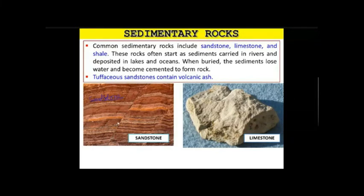Sandstone has a distinctive feature — it is often faulted. Suppose there is a marker bed, and you can see a displacement here. This displacement from this bed is also observable. This is your fault line. So sandstone generally occurs with fault lines as well.